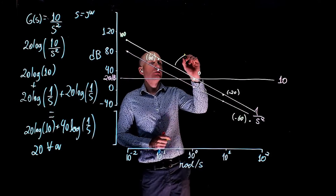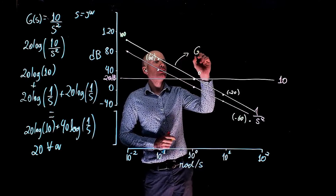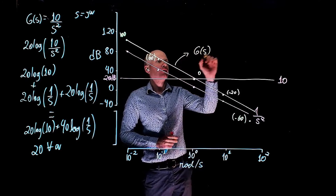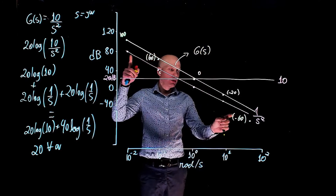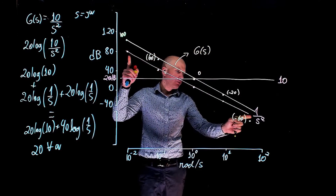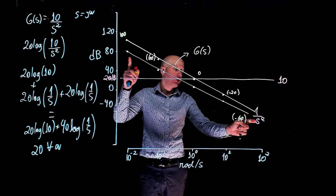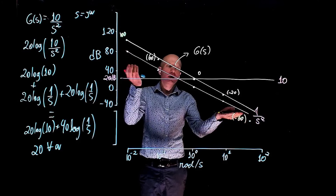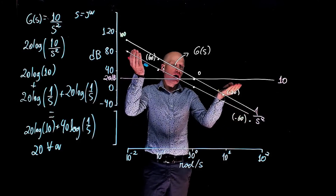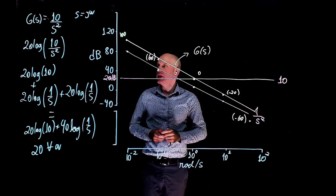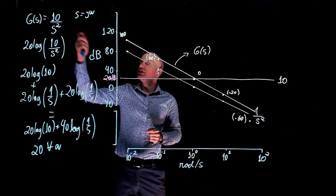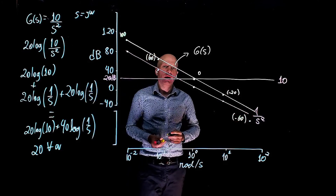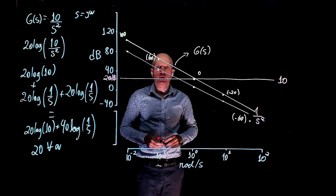And this is now the Bode plot for the function g of s. We simply have the Bode plot of 1 over s squared shifted up by 20 dB, which comes from the gain of 10 in the transfer function.